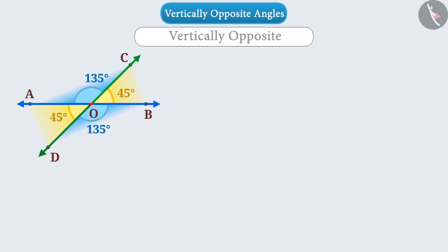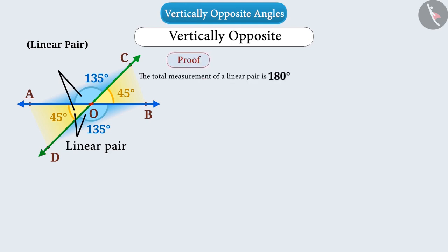As you all know, when we talk of two angles on a line, they are a linear pair. And as you know, the total measurement of a linear pair is 180 degrees. From this understanding,